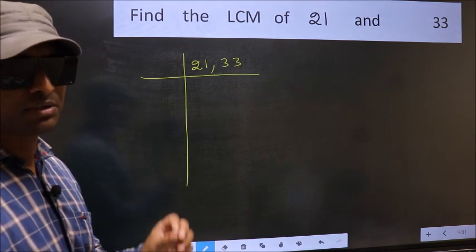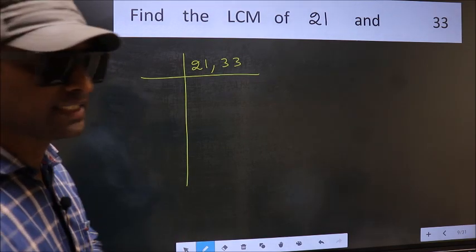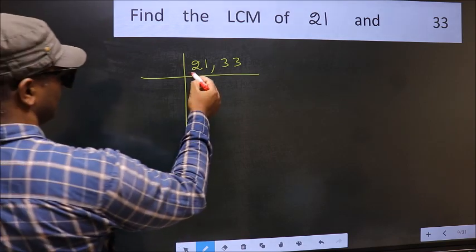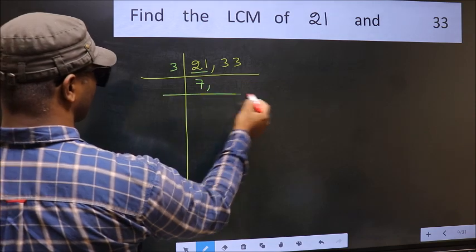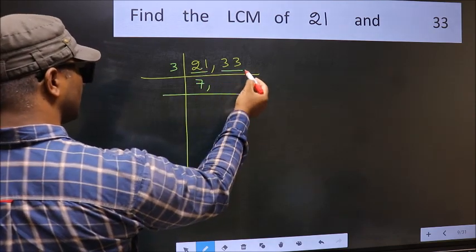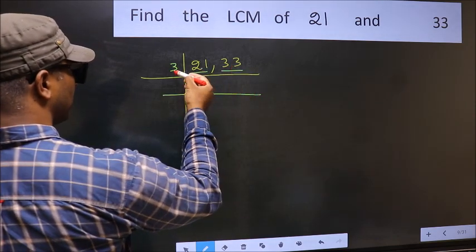Now you should focus on the first number, which is 21 here. 21 is 3 times 7 equals 21. The other number is 33. 33 is divisible by 3.